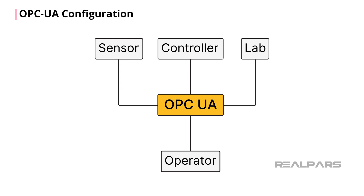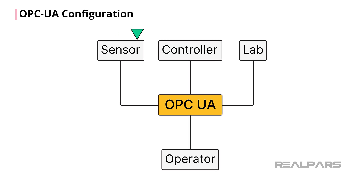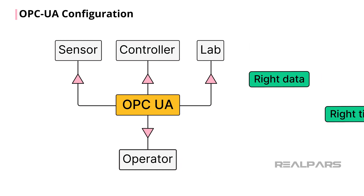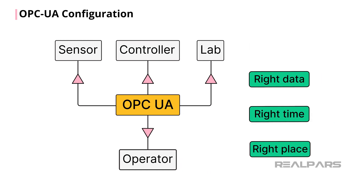OPC UA is the ideal communication method for amalgamating data from multiple sources, such as sensors, controllers, lab analysis equipment, and operator entries. This holistic view is crucial for quality assurance. With its ability to integrate data from all sources, it truly is the maestro in the orchestra of production. OPC UA allows the system to be proactive, delivering the right data, at the right time, to the right places.